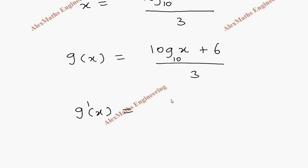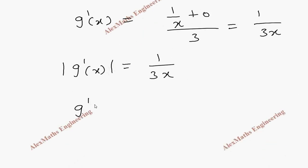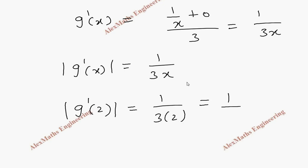The derivative g dash of x works out to 1 divided by 3x. We have to take the modulus of g dash of x, which is 1 by 3x, and substitute the values x equals 2 and x equals 3. We calculate modulus of g dash of x: when x is 2, we get 1 by 6, which is less than 1.